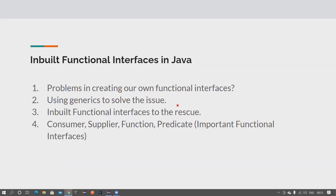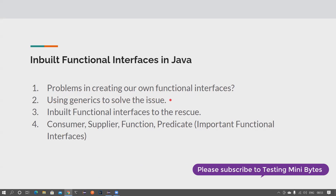Creating functional interfaces is very simple - you need to create an interface and add an abstract method; it can also have default or static methods. We have learned how to create our own functional interfaces and how to provide an implementation using a lambda expression. So what is the problem with that approach? We're going to see that in detail today, and how we can solve that problem using generics.